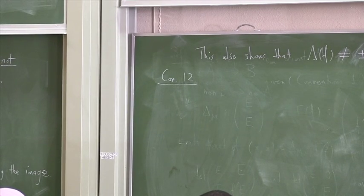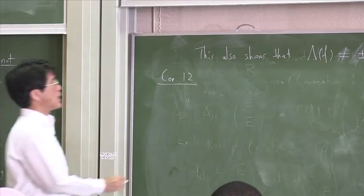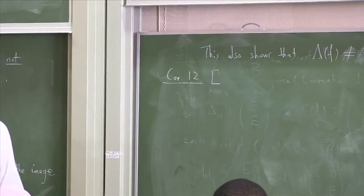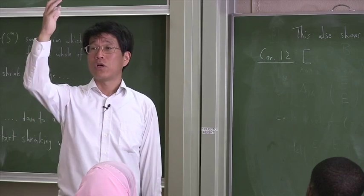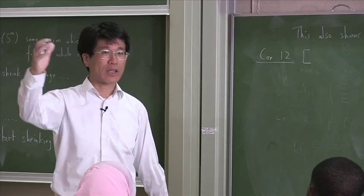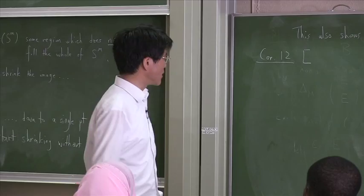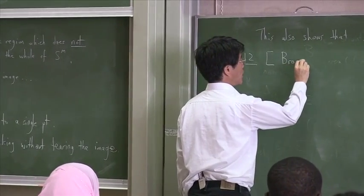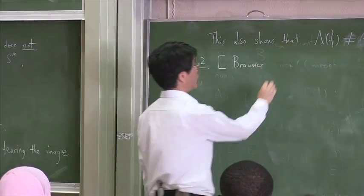The corollary that we harvest, do you remember this word corollary, is super famous. Yesterday we encountered the Jordan curve theorem and its generalization to any dimension. Now I'd like to ask you, has anybody in the room heard of the Brouwer fixed point theorem?